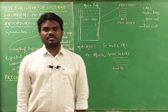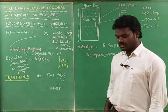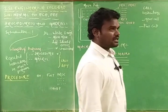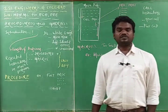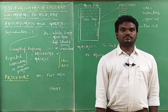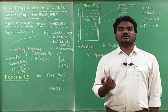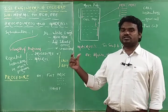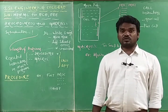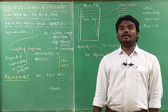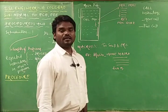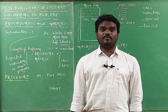We are going to close the assembler directives topic with two more which are very important from the examination point of view. A short answer question may ask you to give the difference between procedure and macros, or a long answer question may ask you to explain procedure and macros in detail in the 8086 microprocessor. These two are assembler directives that give directions to the assembler when converting assembly language into machine language.